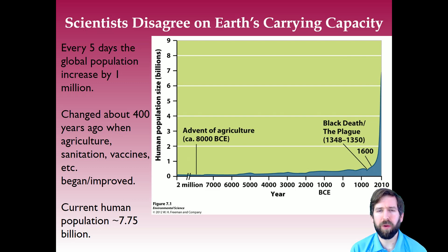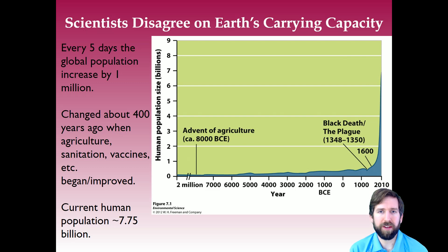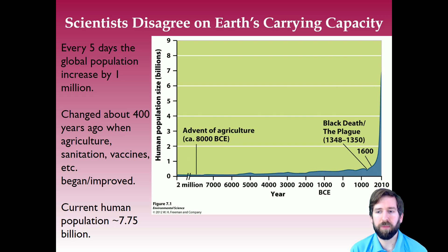Why haven't we had such large populations before? This changed about 400 years ago when agriculture, sanitation, vaccines, and health care were being developed. We could sustain more people with more food, and we could keep people alive longer with better sanitation and better health care into old age. The human population naturally increased through all of these advances.